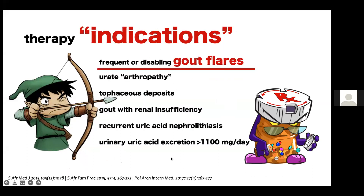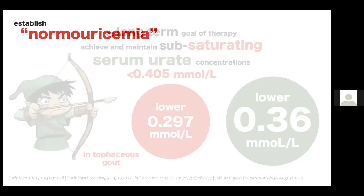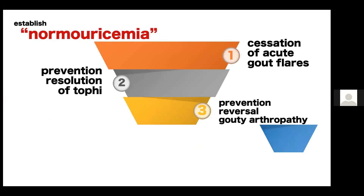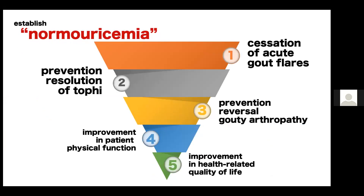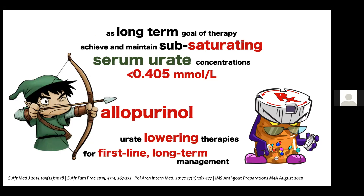Those are the targets we need to remember. When we treat to target, we terminate flares, reduce their incidence, prevent them, and get tophi to resolve. We may reverse arthropathy, improve physical function, and improve health-related quality of life.